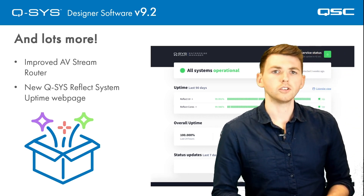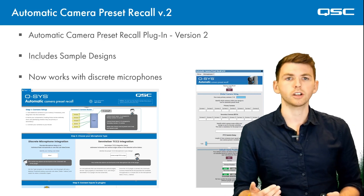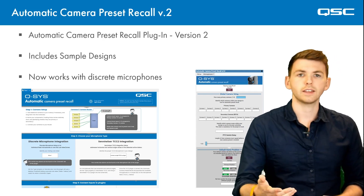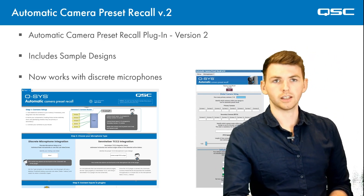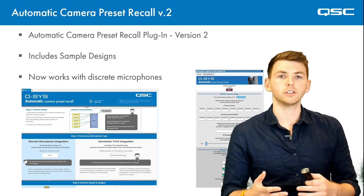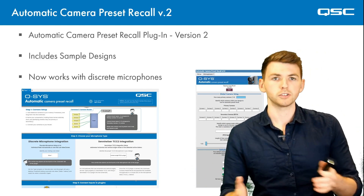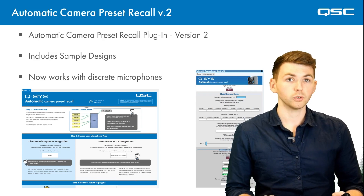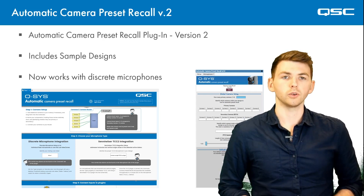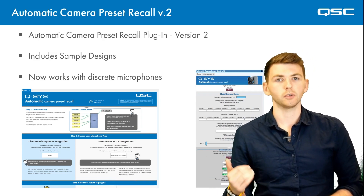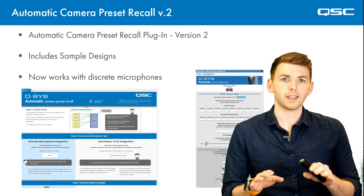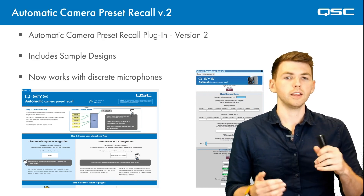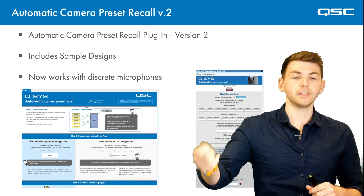Lastly, there is a new release of the Automatic Camera Preset Recall plugin, now on version two. It lets you take angle data from the Sennheiser Team Connect Ceiling microphone, bring that into QSYS, and use that to control cameras, camera positions, and selected cameras. The new version adds support for up to eight cameras, and each of those can have a secondary camera paired with it. These work together as a primary-secondary pair, meaning the camera that is not currently visible is the one that will move to a new location and then be switched to.